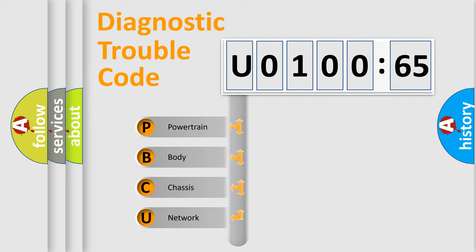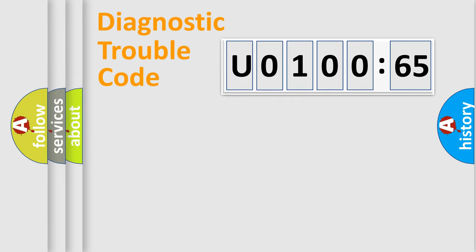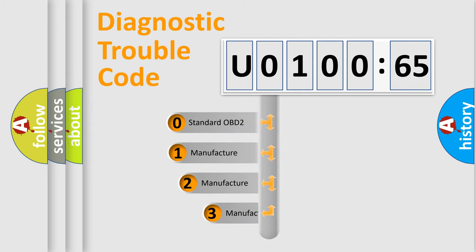We divide the electric system of an automobile into four basic units: Powertrain, Body, Chassis, and Network. This distribution is defined in the first character code.